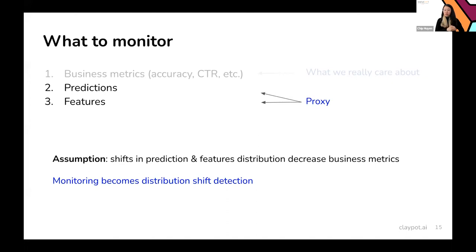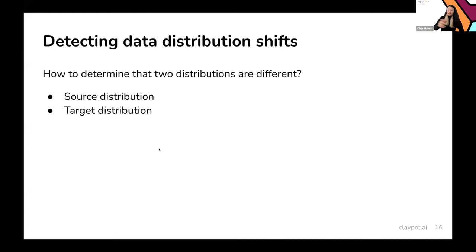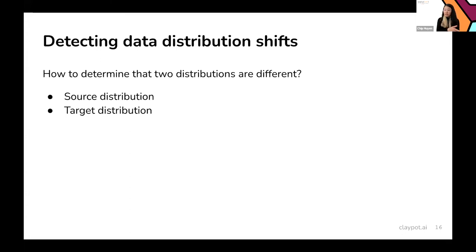So monitoring becomes a problem of detecting distribution shifts. You have two populations and want to determine whether they come from the same distribution. One distribution might be training data, another might be production data — or one from yesterday and one from today. The baseline distribution you compare against is called the source distribution; the one you're checking for deviation is called the target distribution.